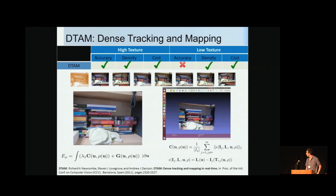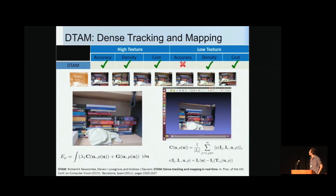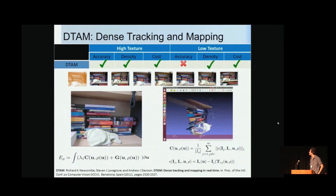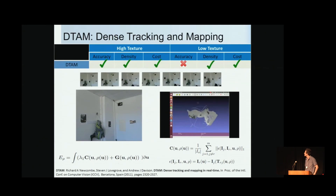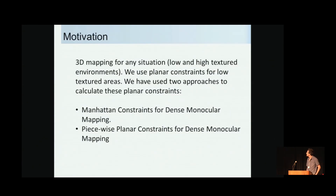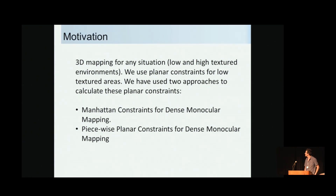The reconstruction is quite accurate in high-texture environments, but in a low-texture environment such as our lab, the walls get corrupted because the photometric term is not informative there. Our motivation is to do 3D mapping for any situation — low and high texture environments. We use planar constraints for low-texture areas, with two approaches: the Manhattan approach and the piecewise planar approach.